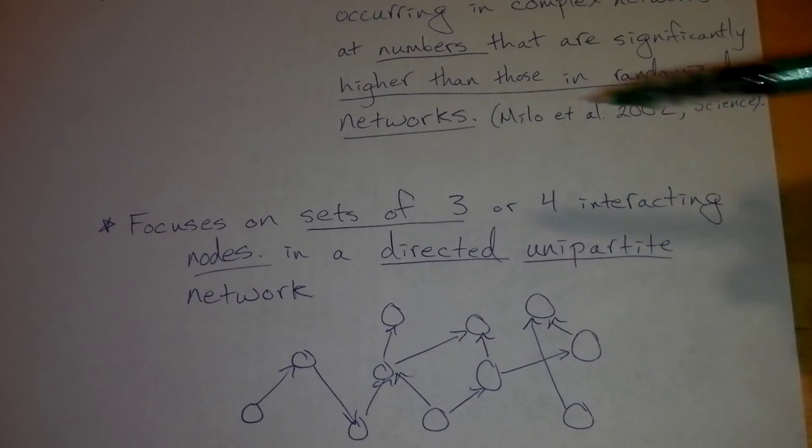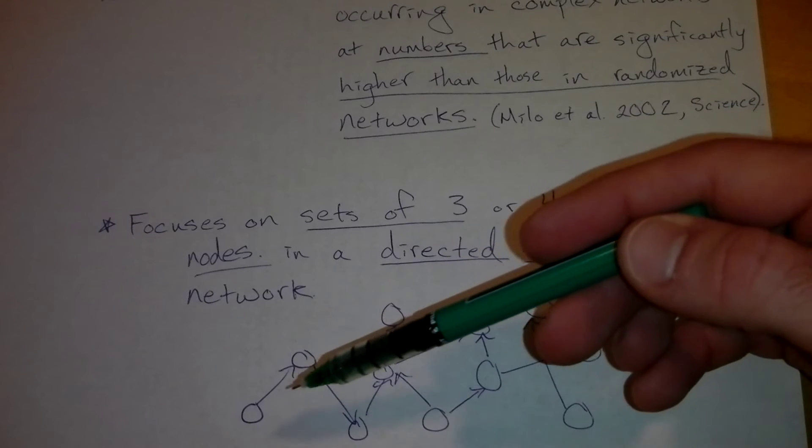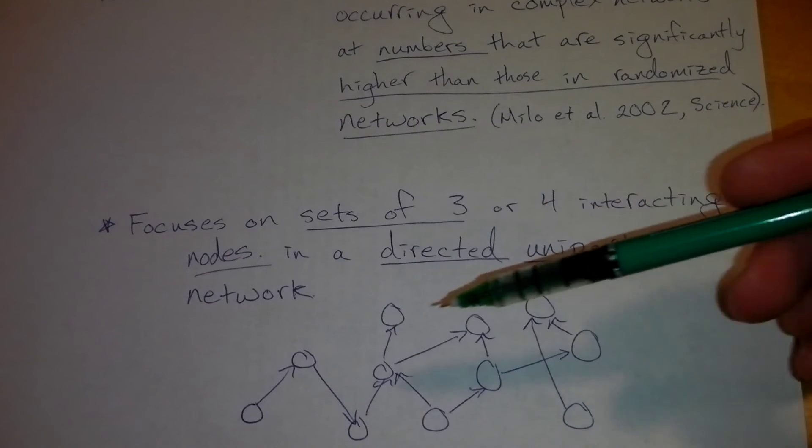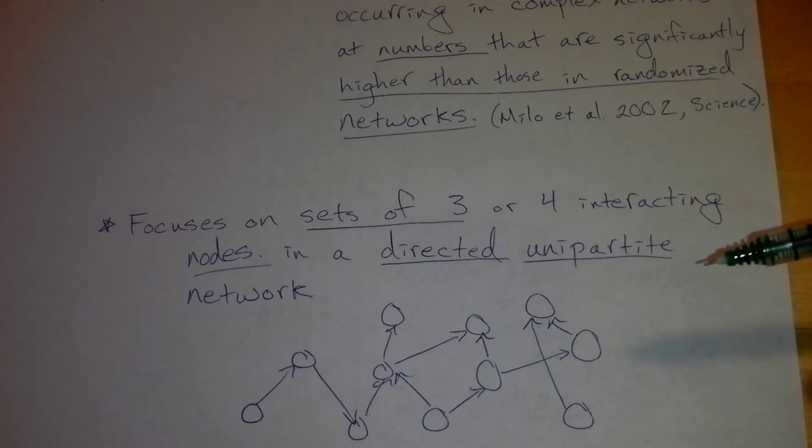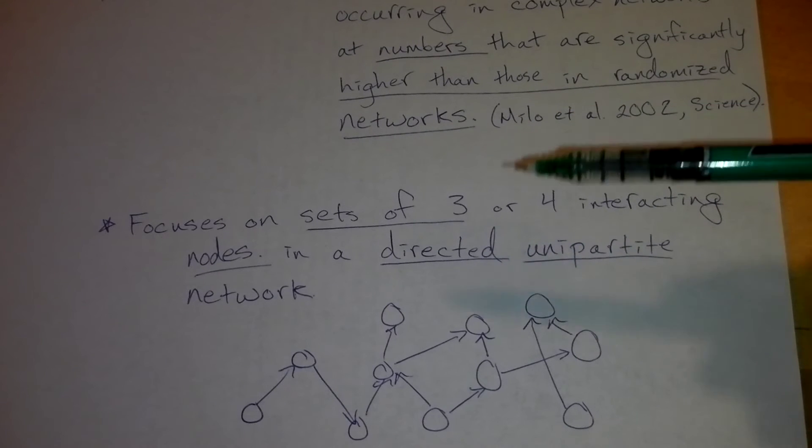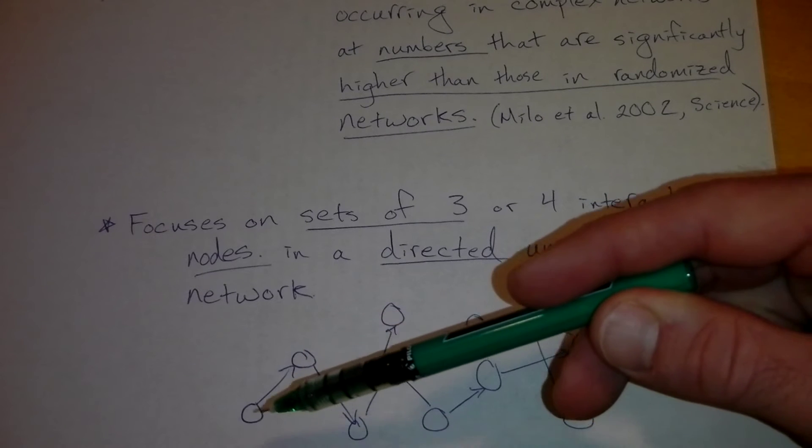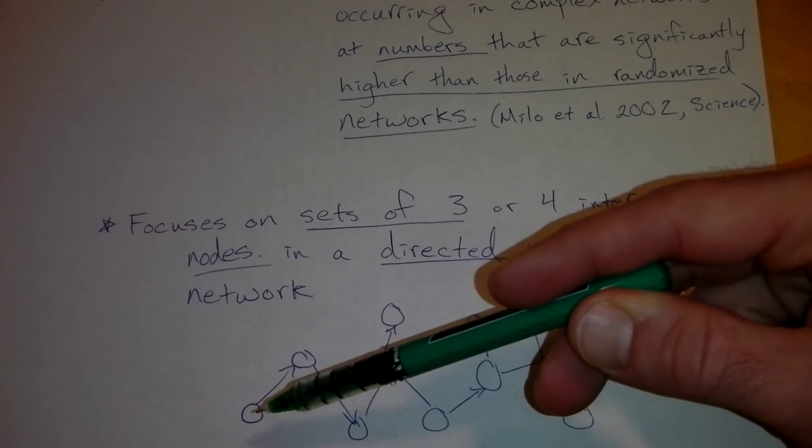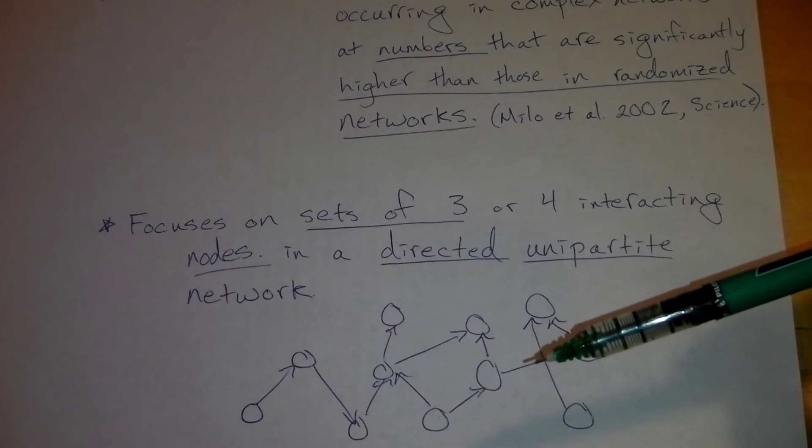Typically, we're going to just focus on three species. It will look for common patterns of interactions that are occurring between three species. So one example of a common interaction in food webs is a food chain. So we have energy going from a resource to a consumer to another consumer.